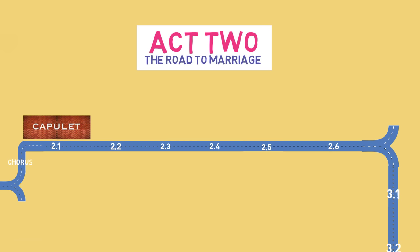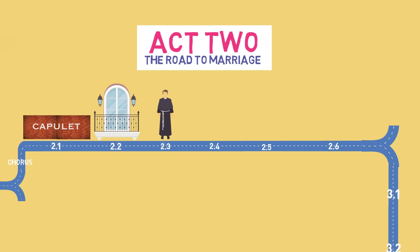Romeo now faces a choice: does he remain safe with Benvolio and Mercutio, or face the danger of going back into the Capulet house? Because he's now in love, he must go back to see Juliet. Romeo and Juliet meet for the second time in the so-called balcony scene, Act 2, Scene 2. At the end of this scene, Juliet says she will send a messenger tomorrow to see if Romeo still wants to marry her. Romeo goes immediately to Friar Lawrence and gets him to agree to marry them the next day, underlining his commitment to love.